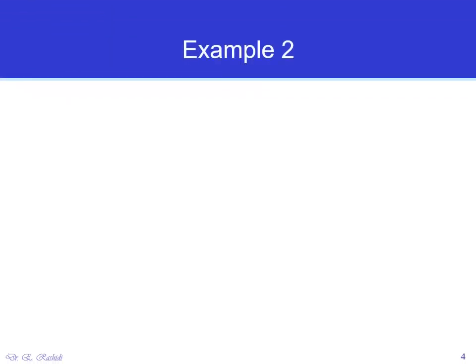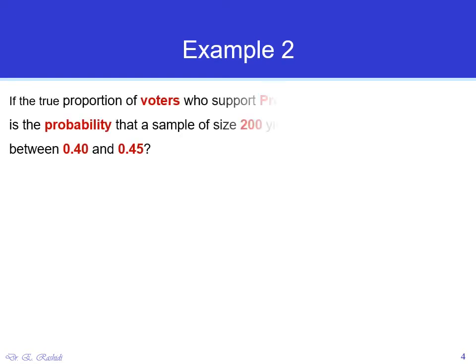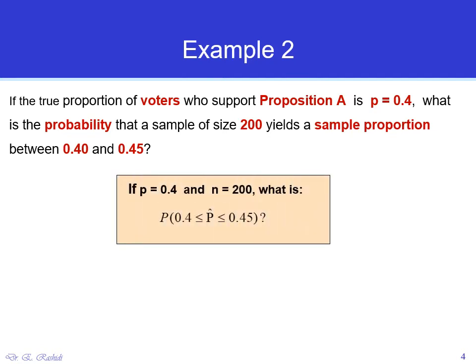Example: If the true proportion of voters who support Proposition A is 0.4, what is the probability that a sample of size 200 yields a sample proportion between 0.4 and 0.45? So P = 0.4 (the population proportion) and N = 200.